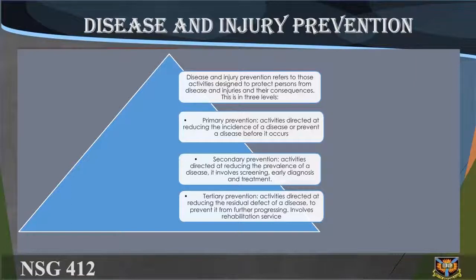Primary prevention involves activities directed at reducing the incidence of a disease or preventing a disease before it occurs. Secondary prevention involves activities directed at reducing the prevalence of a disease and includes screening, early diagnosis, and treatment. Tertiary prevention involves activities directed at reducing the residual defects of a disease to prevent it from further progressing, and involves rehabilitation services.